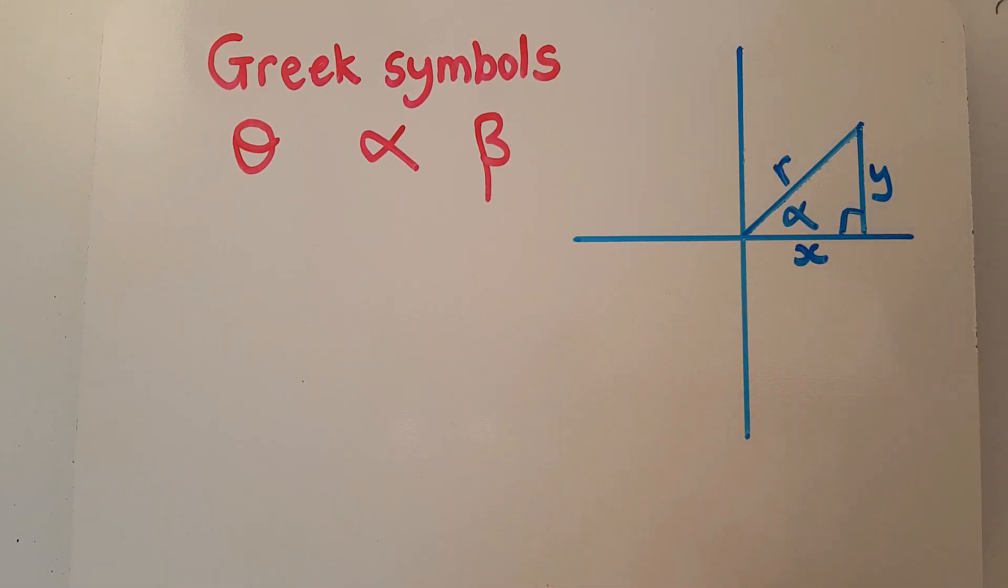This one is the y, so we've got x, y, and r. What will be given to you is numbers for these things, and you may have to use Pythagoras to work them out.